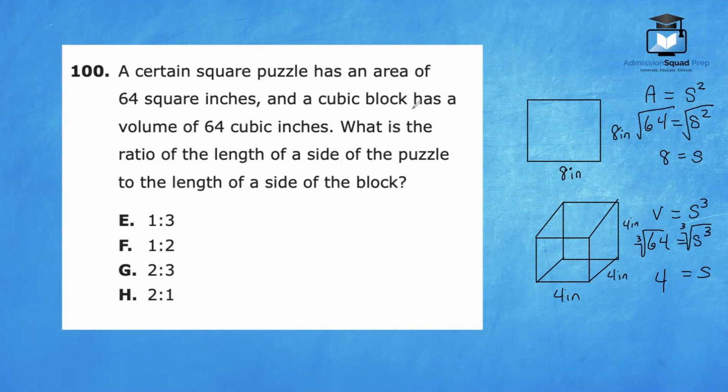The final question is asking us to find the ratio of the length of a side of the puzzle, which is eight inches to the length of a side of the block, which is four inches. Eight to four will simplify to the ratio two to one. Therefore, H is the correct answer.